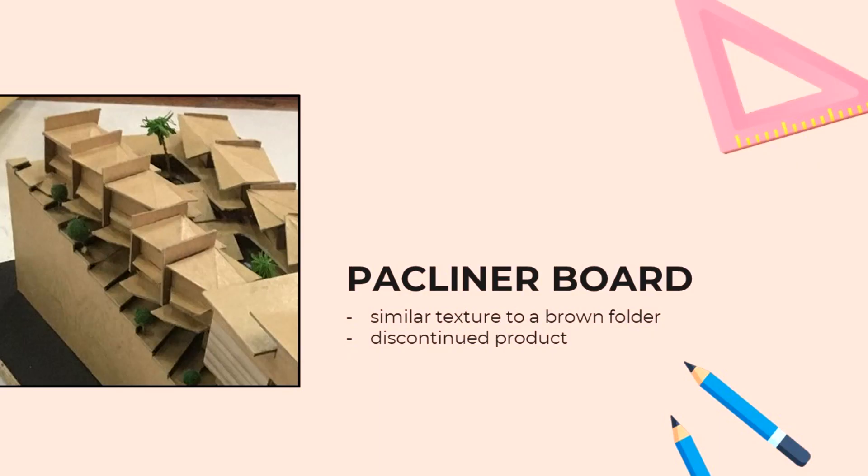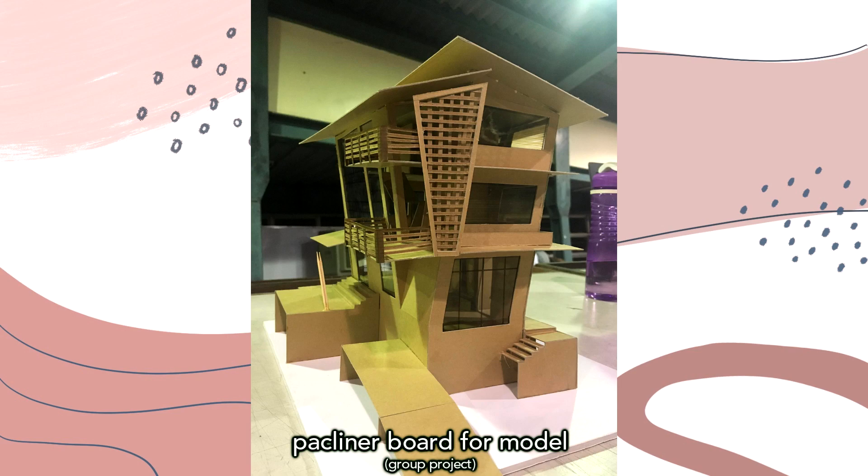Then lastly we have pack liner. I wanted to include this because in my early days of Arki, this was the material to use for sketch models. It's like a brown folder but in board form. I love the look of it because it makes your model look cleaner — it's so beautiful. But sadly, they stopped making this board. The company that made them in Japan stopped producing this product, so I only used it until my third year. There is never again a pack liner.